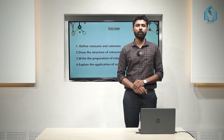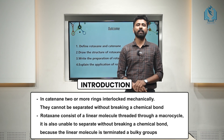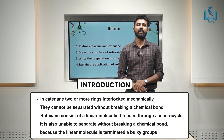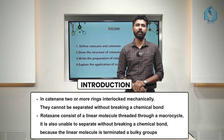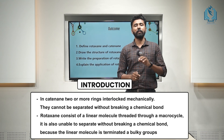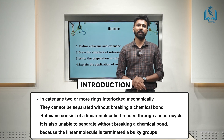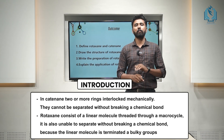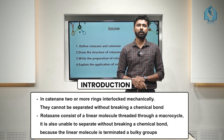First of all, we could discuss what is rotaxane and catenane. Simply, we could say that catenanes are two or more macrocyclic rings that are mechanically interlocked and we cannot separate them without breaking a chemical bond. In the case of rotaxane, we have a linear molecule which is terminated by two bulky groups at the two ends and it is threaded through a macrocyclic ring. The linear molecule terminated by the bulky group can be called a dumbbell-shaped molecule.